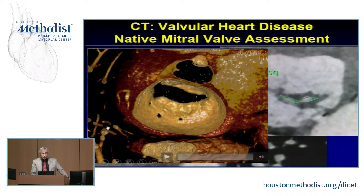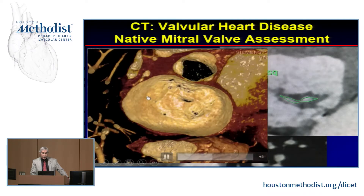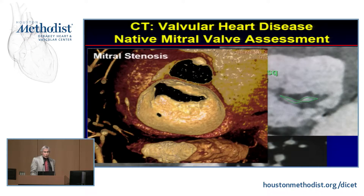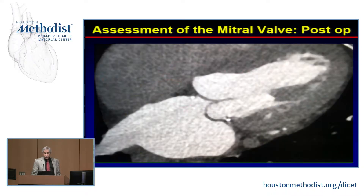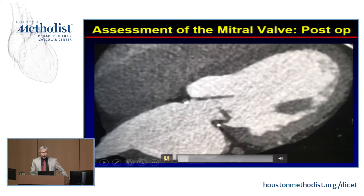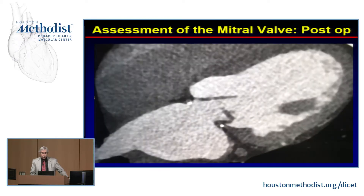We can also do 3D views. This is a 3D view of a patient who had mitral stenosis — you can see the standard fish-mouth appearance with poor opening of the valve. We can look at CT in many ways to get an anatomic view. This is a patient who had surgery for mitral regurgitation and had a repair, and you can see there's now coaptation of the leaflets.